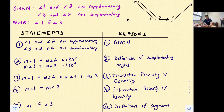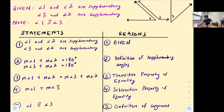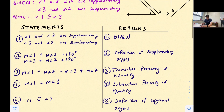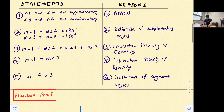Now, since angle one plus angle two equals 180 and angle three plus angle two equals 180, we can apply the transitive property of equality to say the measure of angle one plus the measure of angle two equals the measure of angle three plus the measure of angle two. Since the measure of angle two appears on both sides, we subtract it from both sides, leaving us with the measure of angle one equals the measure of angle three — that's the subtraction property of equality. Finally, if two angles have the same measure, by the definition of congruent angles, they are congruent.